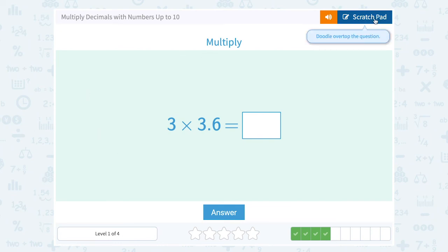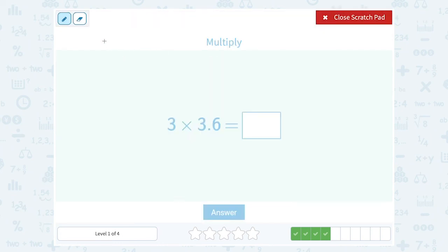3 times 3.6. Well, let's multiply. Remember, you can write the 3 or the 3.6 first. So I'm going to write 3.6, and then I'm going to multiply by 3. Let's see what that gives us.